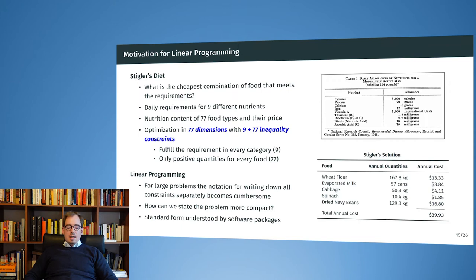We had seen Stigler's diet before in the first lecture. The question there was, what is the combination of food that lets a soldier live, that fulfills all the requirements in calories, protein, calcium, and so on, but which is the cheapest such combination?